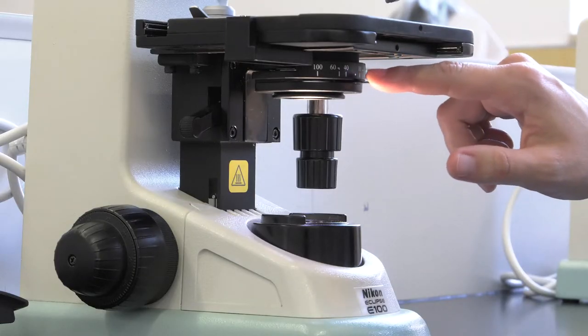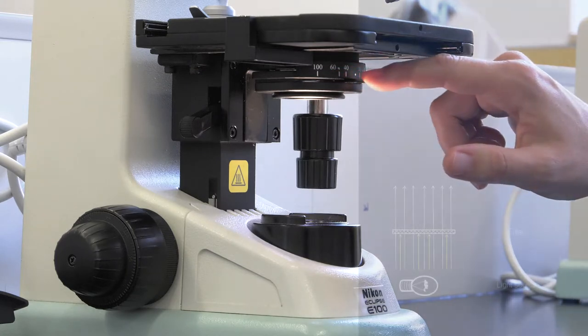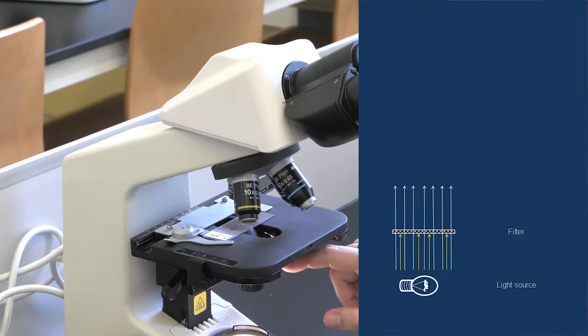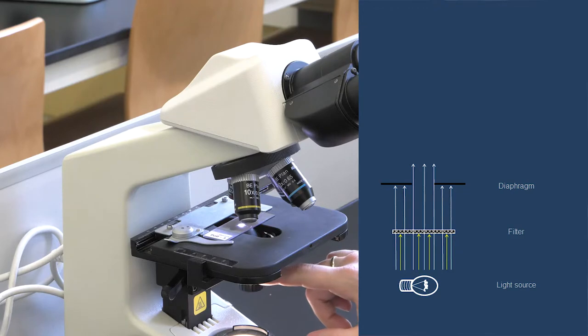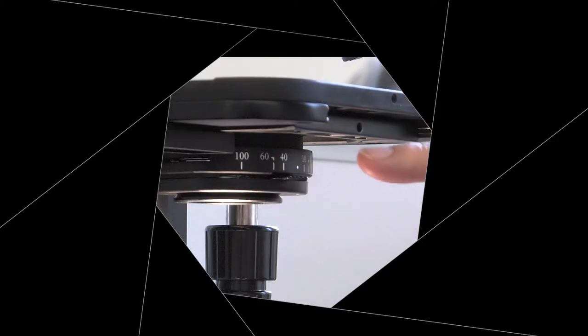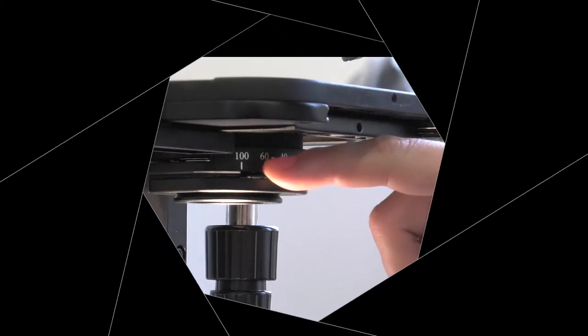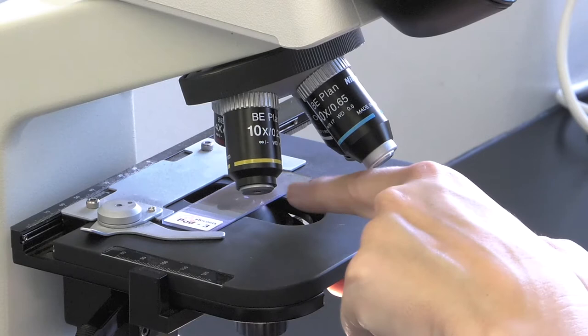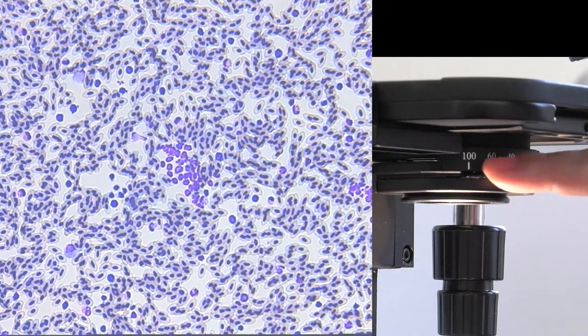Just before the condenser lens, we find the diaphragm lever. The diaphragm, or iris, is the instrument that regulates the amount of light that impinges on the sample. It is formed by a series of overlapping flat plastic plates. Thanks to a lever, the diaphragm opens and closes in a circular way allowing the control of the light input.